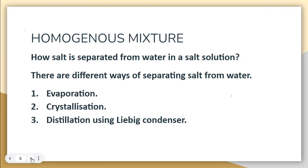For homogeneous mixtures, where the solute is completely dissolved in the solvent — for example salt dissolved in water making a clear crystal solution with no floating particles — there are different ways to separate them: evaporation, crystallization, and distillation using a Liebig condenser. Let's look at each one.